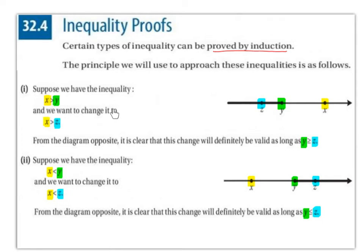And we want to change it to x is greater than z. So x is to the right of z — x is some number that is greater than some number z. From the diagram opposite,